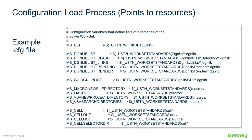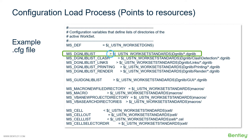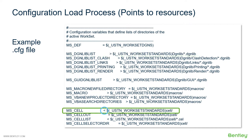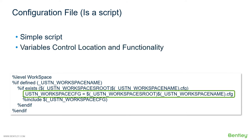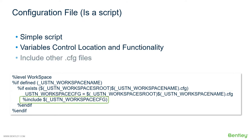Looking at a few examples from the cfg file: msdef uses the equal operand, dgnliblist uses the append operand, and mscell uses the prepend operand. As mentioned earlier, a configuration file is really a simple script. Looking at the if-defined statements and if statements, these are very similar to other programming languages. We can set variables based on the logic within these statements, and potentially conditionally include other cfg files.